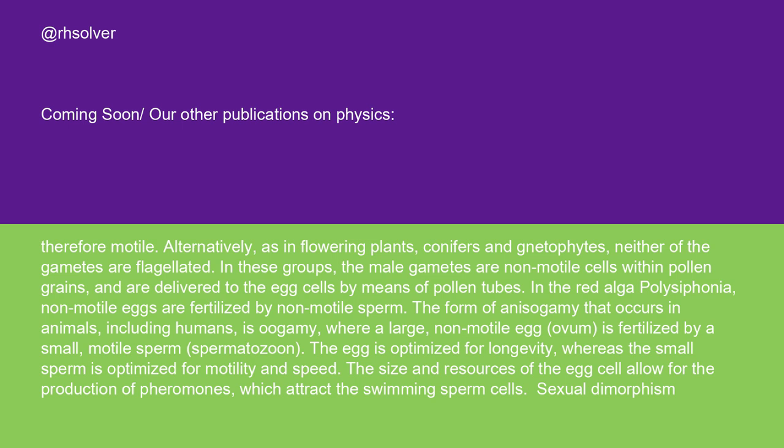The form of anisogamy that occurs in animals, including humans, is oogamy, where a large, non-motile egg (ovum) is fertilized by a small, motile sperm (spermatozoan). The egg is optimized for longevity, whereas the small sperm is optimized for motility and speed. The size and resources of the egg cell allow for the production of pheromones, which attract the swimming sperm cells.